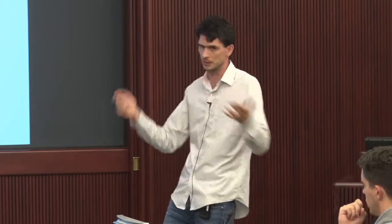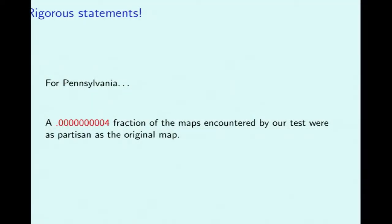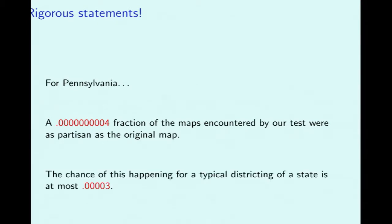We apply this theorem to our test: we took an object, made a sequence of random changes to it, and observed that it got consistently fairer — meaning we conclude this thing we started with is very atypical. The theorem gives a formula to make statistical claims in a precise way. For Pennsylvania, only four ten-billionths of maps encountered were as partisan as the original map — meaning the chance of this happening for a typical districting of the state would be at most three hundred thousandths.